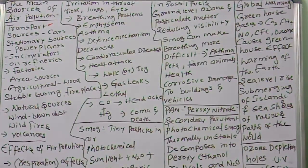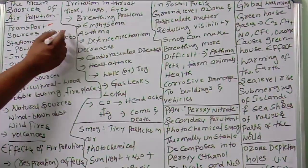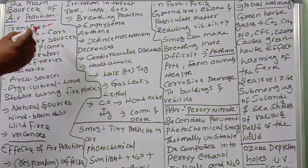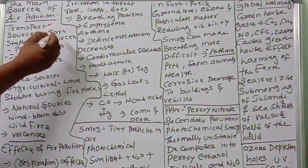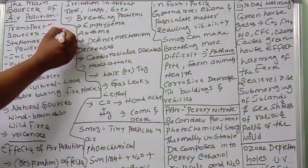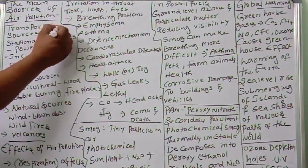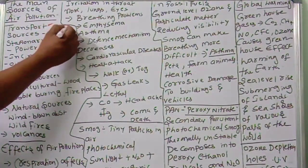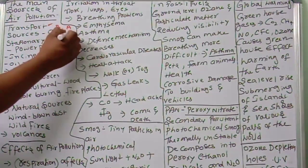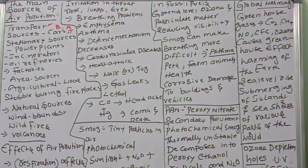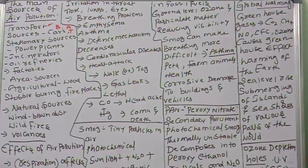Transport sources include cars, buses, aeroplanes, trucks, and trains. These are all transport sources because they release large amounts of carbon dioxide.